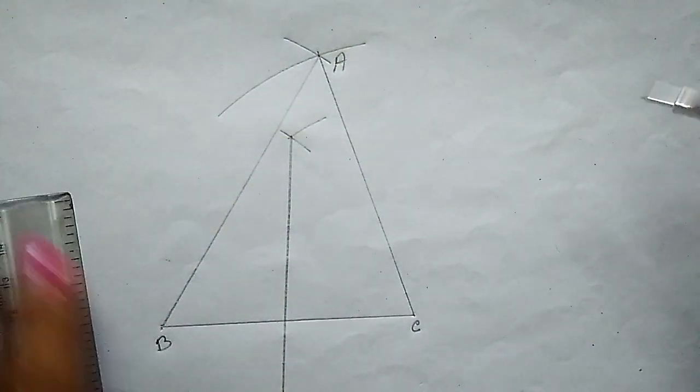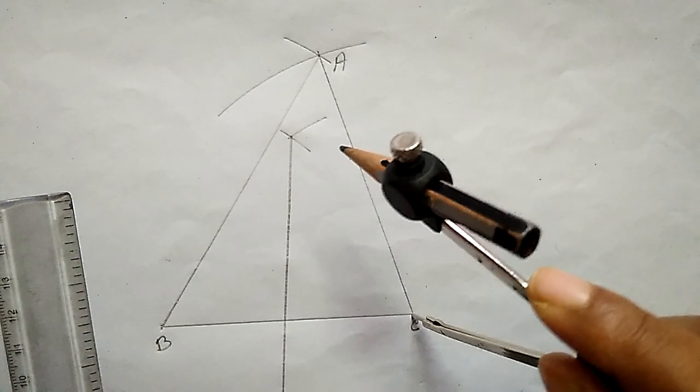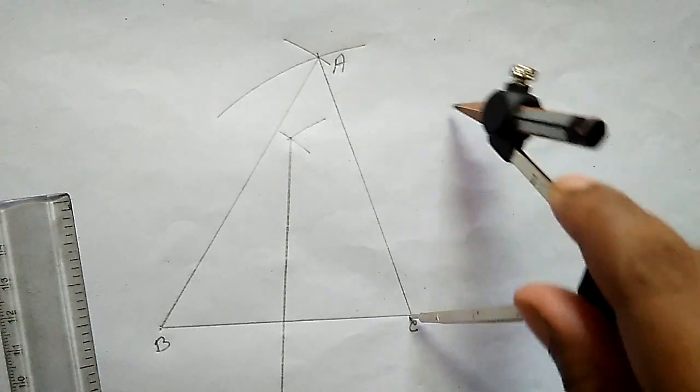This is the perpendicular bisector of BC. Now I am drawing a perpendicular bisector of AC.